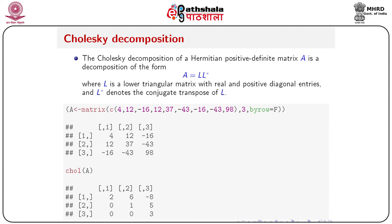The last topic is Cholesky decomposition. The Cholesky decomposition of a Hermitian positive definite matrix A is of the form A equals L L-star, where L is a lower triangular matrix with real and positive diagonal entries, and L-star denotes the conjugate transpose of L. Assign a three by three matrix and use the chol() function — passing the matrix within chol() gives the Cholesky decomposition, providing L from which you can easily get the conjugate transpose.